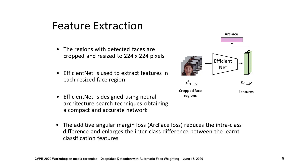EfficientNet is trained using additive angular margin loss, also known as ArcFace loss. This loss reduces the intra-class difference and enlarges the inter-class difference between the learned classification features, allowing for a better discrimination between real and fake faces.